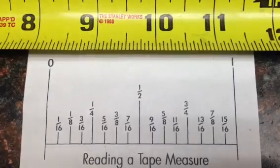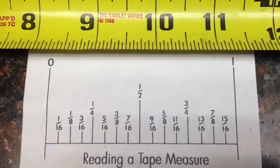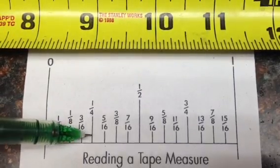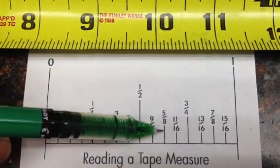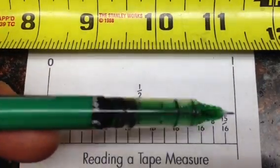Now cut those quarters in half again and you get eighths. So you got one eighth, two eighths, three eighths, four eighths, five eighths, six eighths, seven eighths, and your inch.